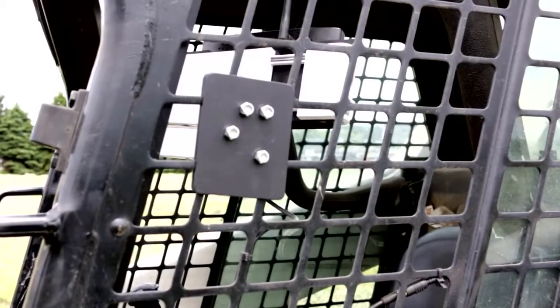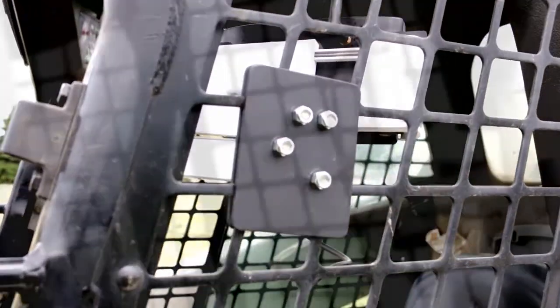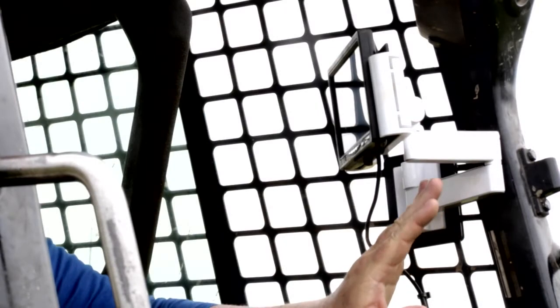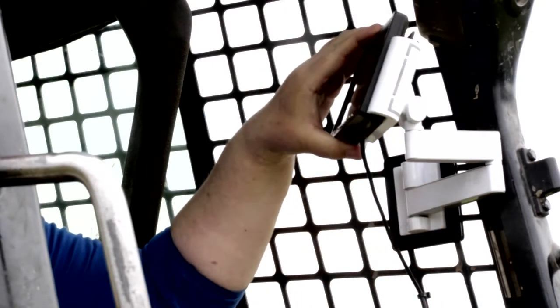It mounts directly to the side of the cage. It takes about 20 minutes for the complete installation of both the bracket, which is fully adjustable as you can see here.